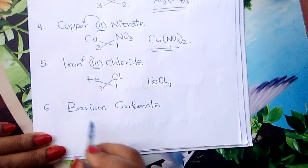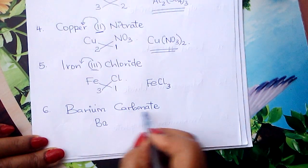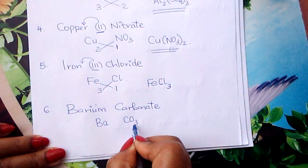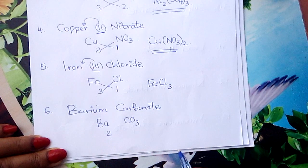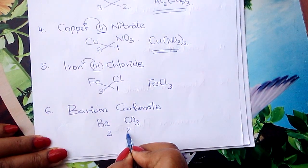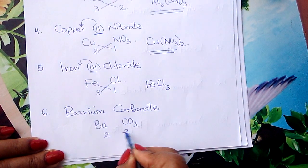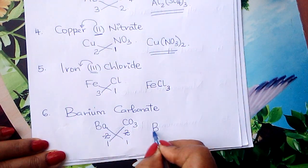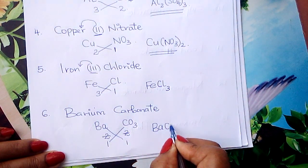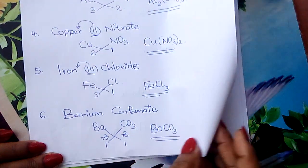We go to barium carbonate. Barium symbol is Ba. Carbonate is a radical — we write CO₃, ignore the charge. Valency for barium is 2 from our song, valency for carbonate is 2. Simplify by 2: 1 and 1. So they each take 1 — no need to write it. That is the formula of barium carbonate: BaCO₃.